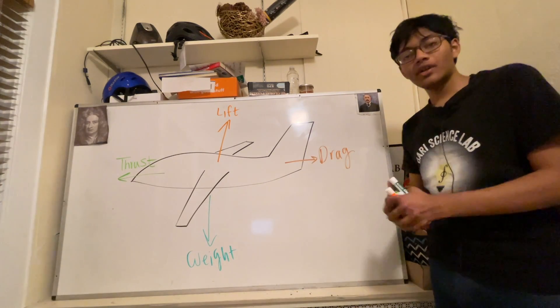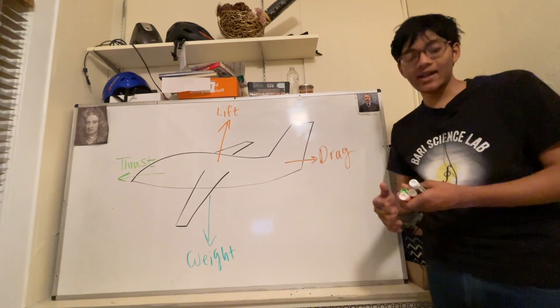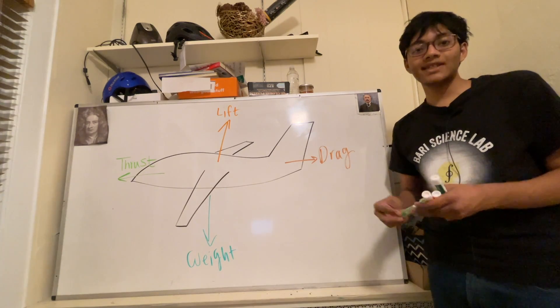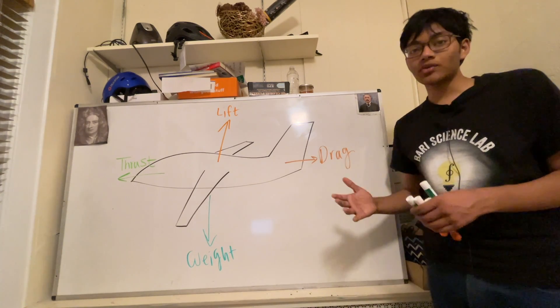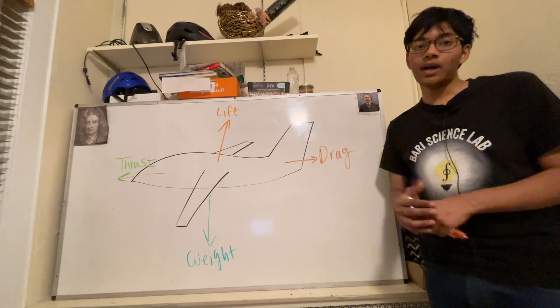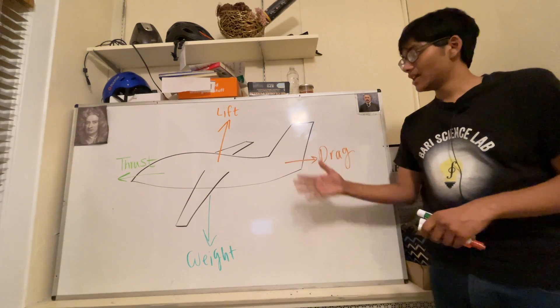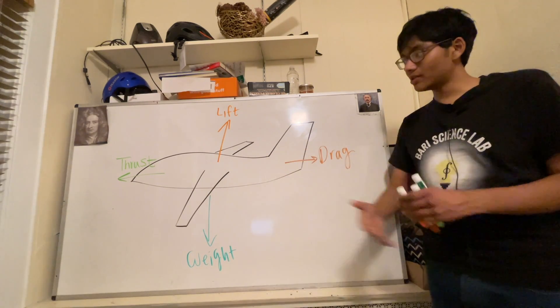These four forces, if they're in equilibrium, a.k.a. the net force is zero, then the plane is stationary in the air. In other words, if the plane is moving, it'll keep on moving with a constant velocity. If it's at rest, it'll stay on the runway.